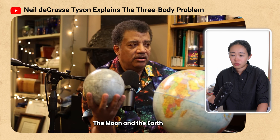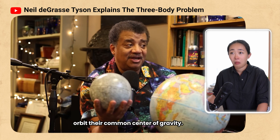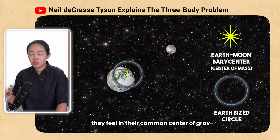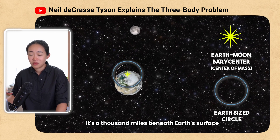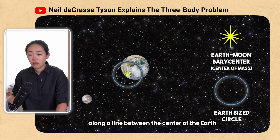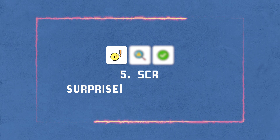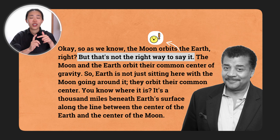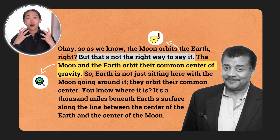Neil explains: "The moon and the earth orbit their common center of gravity. Earth is not just sitting here while the moon goes around it — they orbit their common center. You know where it is? It's a thousand miles beneath earth's surface, along a line between the center of the earth and the center of the moon." Here's part two of the framework we just saw — once we've introduced surprise and caught people's attention, we introduce the complication. In Neil's case: the moon doesn't actually orbit the earth, but rather the two of them orbit their center of mass.